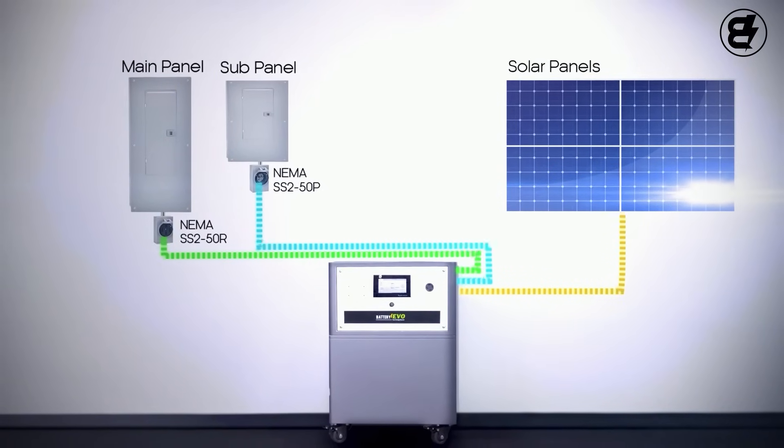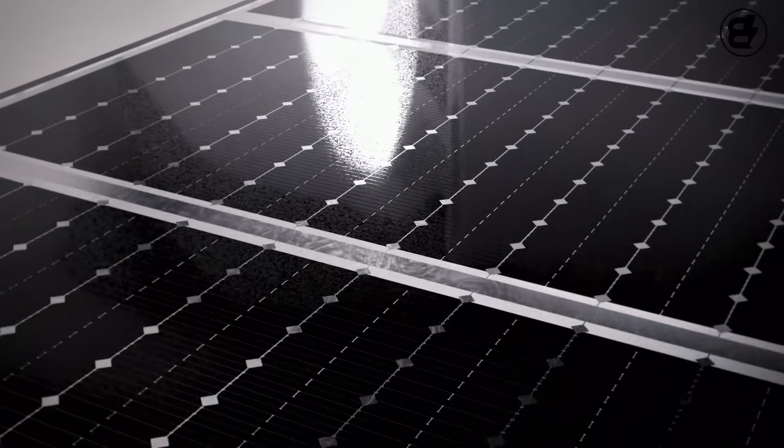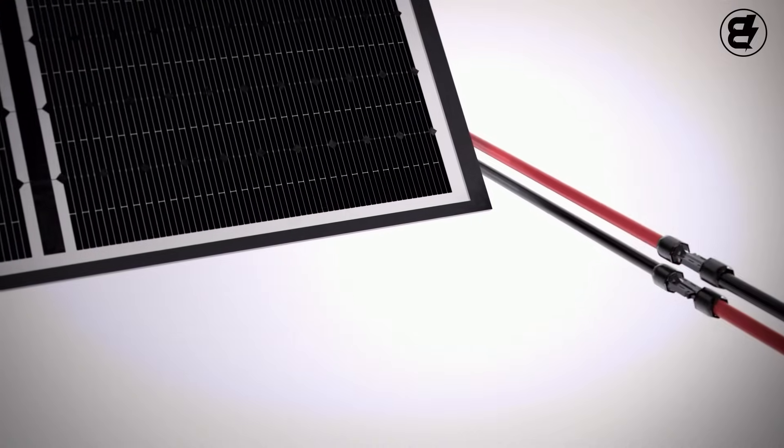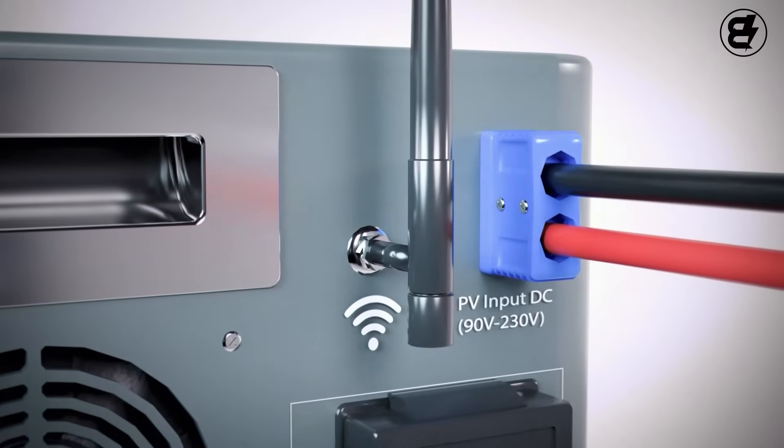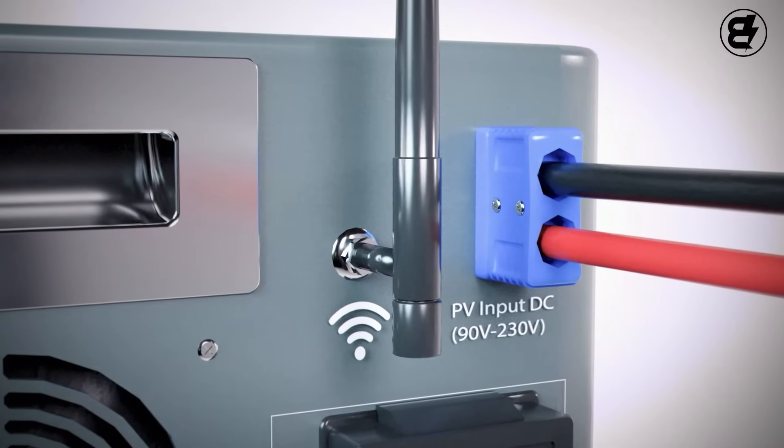To connect your solar panels to the Walrus and go completely off-grid, you'll connect the positive and negative on your PV cables and run the Anderson side into the PV input on your Walrus.